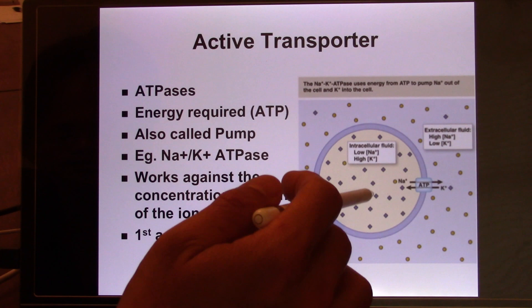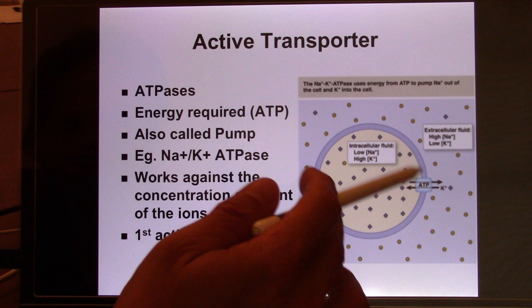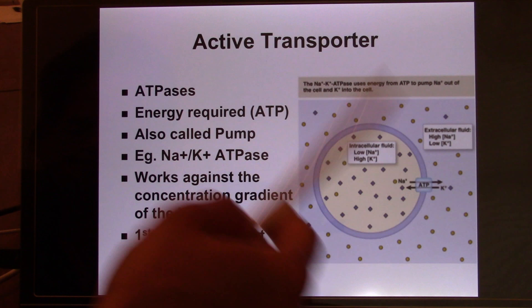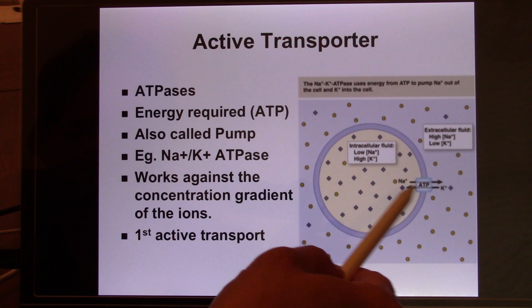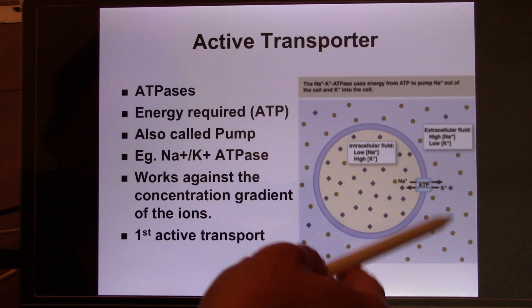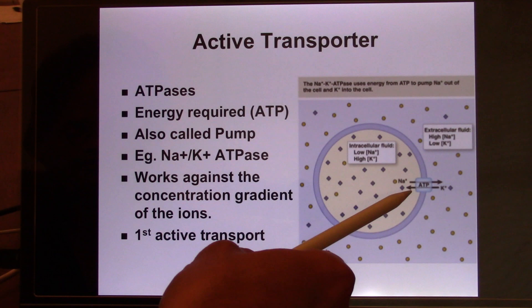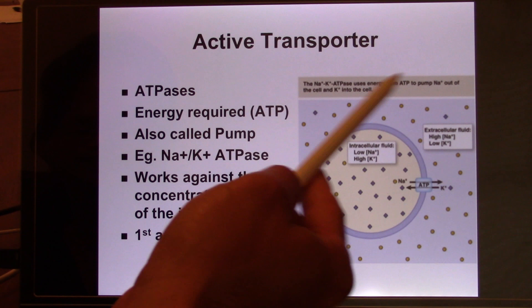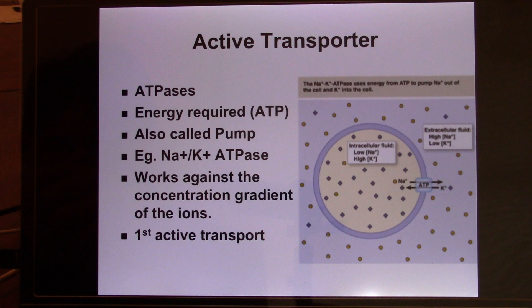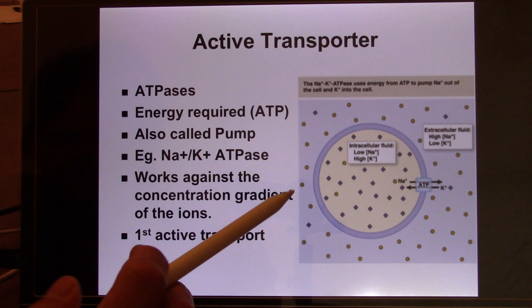The sodium environment inside the cell is low, and high outside. So when this pump works, it keeps pumping sodium out. Potassium is different — potassium is high inside the cell and low outside the cell. So this pump keeps pumping potassium in. It maintains the environment so that the ECF is a high-sodium environment and the ICF is a high-potassium environment. It's like an AC system running 24 hours a day, 7 days a week. Every time it works, it pumps three sodium out and two potassium in.